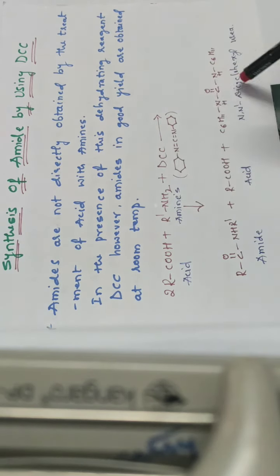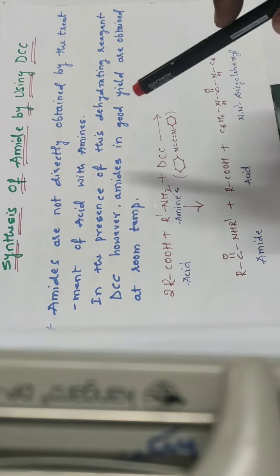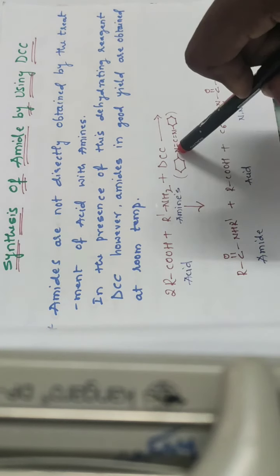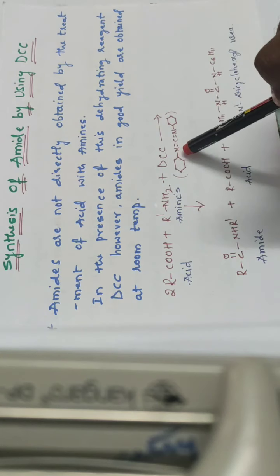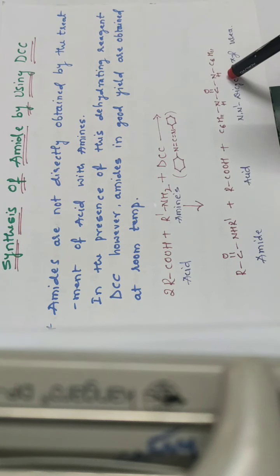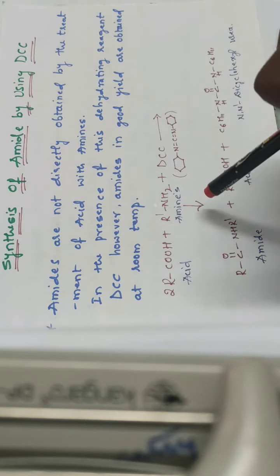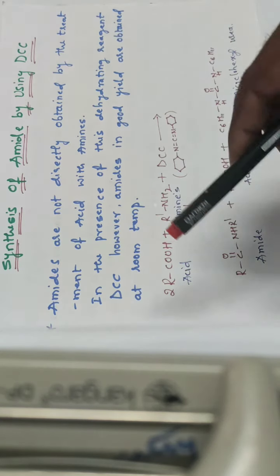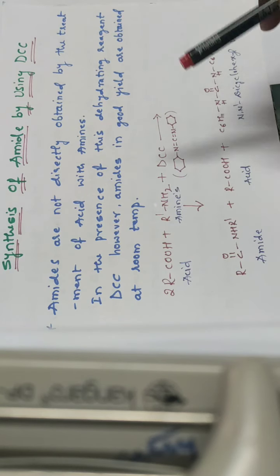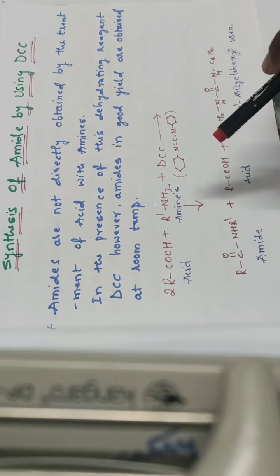Here, DCC converts into dicyclohexyl urea, because the reagent helps to proceed the reaction while changing its own chemical nature. You can see in the structure it has NH, NH and C double bond O for DCC. But after completion of the reaction, DCC converts into dicyclohexyl urea. Reagents and catalysts proceed the reaction in a shorter time compared to their absence, and they also increase the yield of the product.